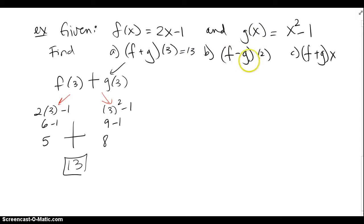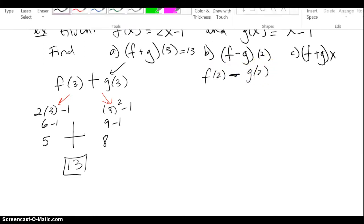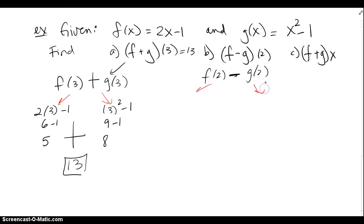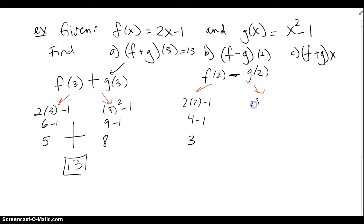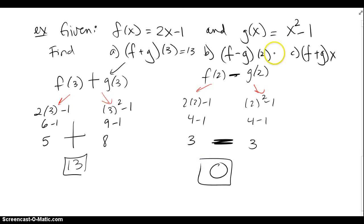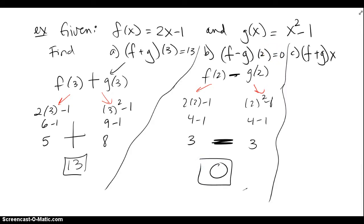For part b, (f-g)(2): both f and g are evaluated at x equals 2 and then subtracted. f of 2 is 2 times 2 minus 1, which is 3. g of 2 is 2 squared minus 1, which is also 3. We subtract them, and that gives 0. So (f-g)(2) equals 0.